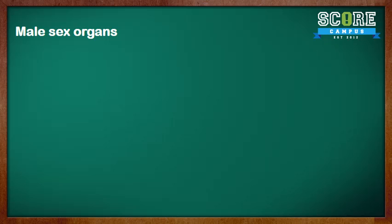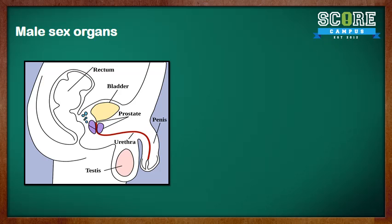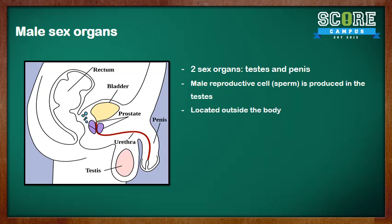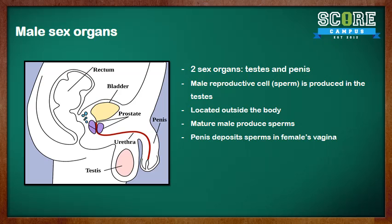Let's look at the male sex organs. This image here shows you the male sex organs. The male has two sex organs: the testis and the penis. This is the testis over here, and this is the penis over here. They are located outside of the body. Only a mature male can produce sperm. The penis is the organ which deposits the sperm in the female vagina.